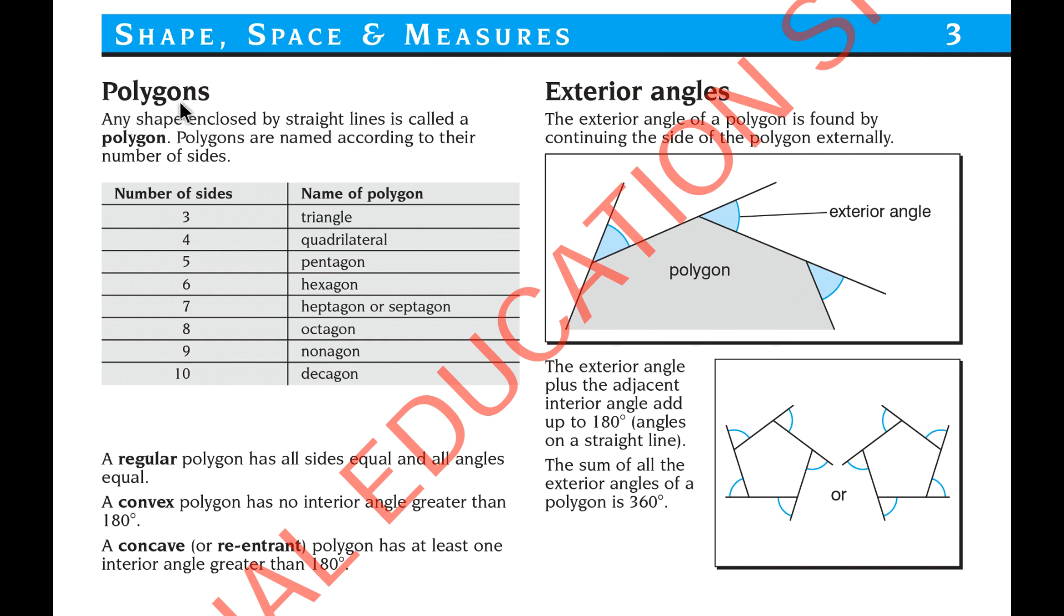This is about polygons. Any shape enclosed by straight lines is called a polygon. Polygons are named according to their number of sides. This column shows the number of sides, and this column shows the polygon names.